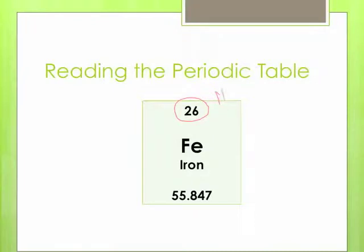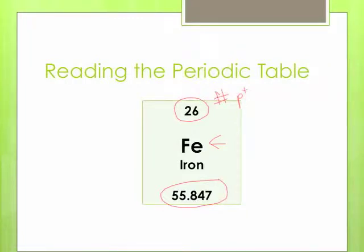It tells you the number of protons. This is the element symbol, and underneath is the element name. Not all periodic tables have the name on it, but a lot of them will. This number here is the mass of the element, and we talked in the last video about how the mass is made up of the number of protons and the number of neutrons.